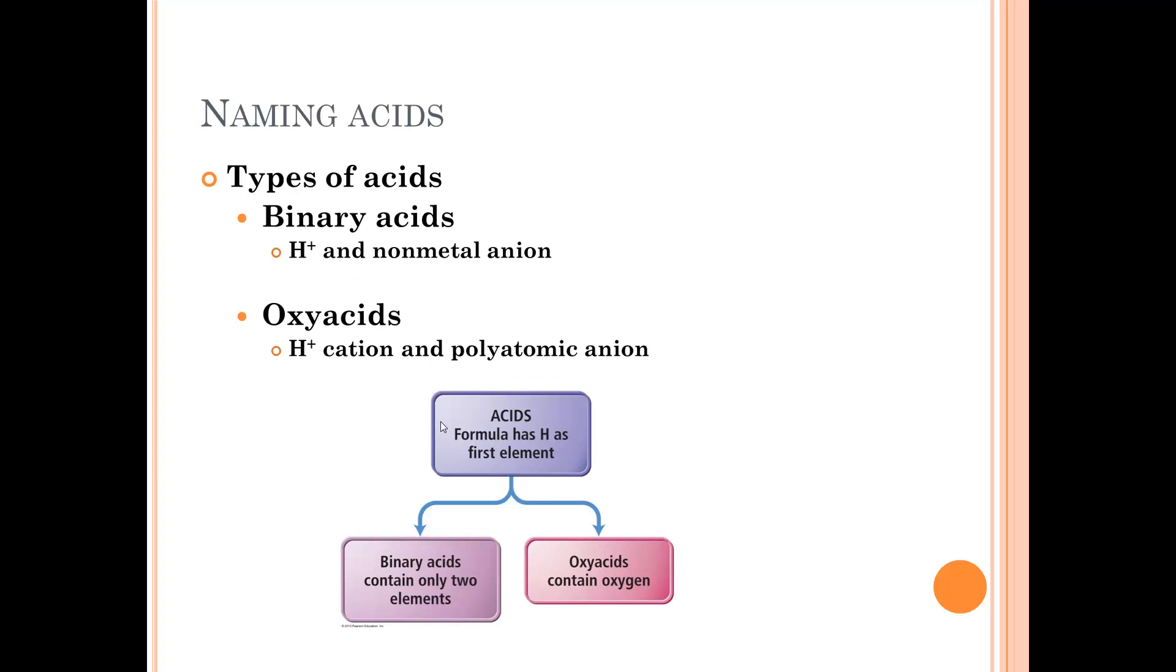So when we're naming acids, there's binary acids, which is a hydrogen and a nonmetal anion, which means it's coming right off the periodic table. And then there's oxy acids, which is the hydrogen and a polyatomic anion. So we have the binary ones which come off the periodic table, and the oxy acids which are polyatomic ions. So let's take a closer look at those.